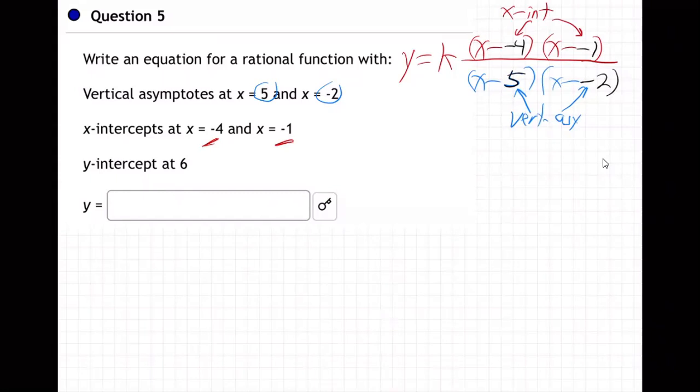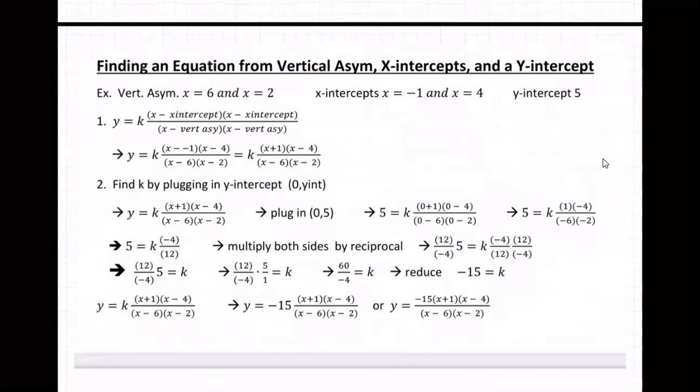So that's y equals k, and that's going to be x plus four, x plus one over x minus five, x plus two, right? The double negative becomes positive, the double negative becomes positive, and the double negative becomes positive. So we're good to there. So we got that much. So that's coming right out of the note.